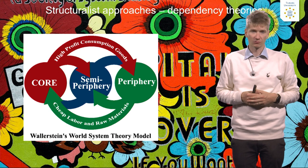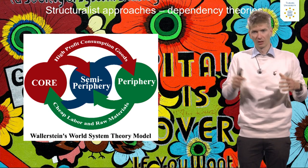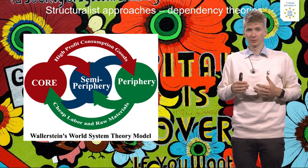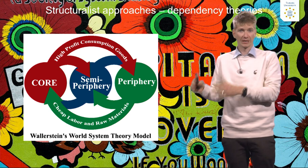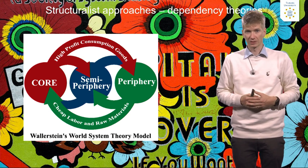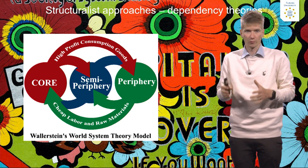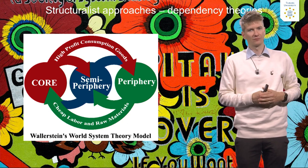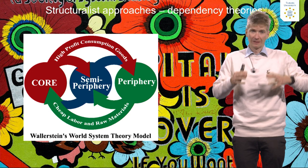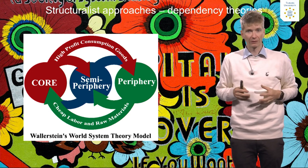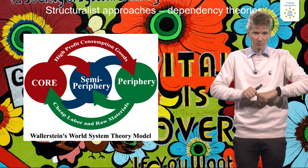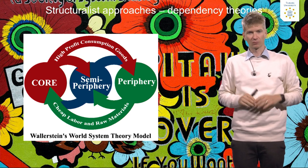In the middle you have the semi-peripheral countries — emerging economies where raw materials are assembled. For example, some materials of your iPhone might come from a mine in Congo, then that raw material is shipped to Taiwan or South Korea where companies assemble it, and finally it gets sold in the core countries where maximum profit can be made. Wallerstein's idea is that structural dependencies exist and that core countries are very interested in maintaining that dependency to maximize profit.